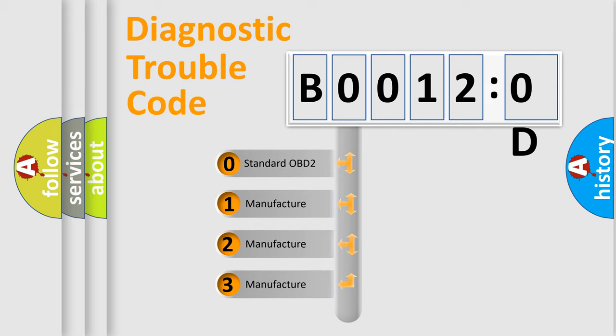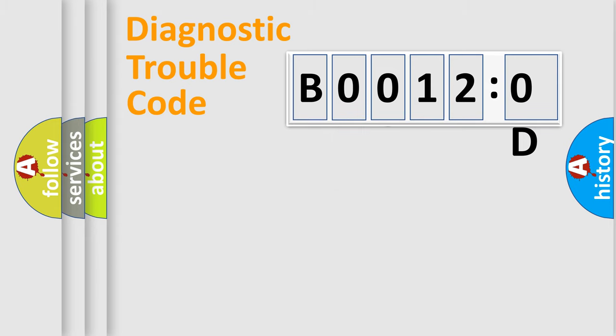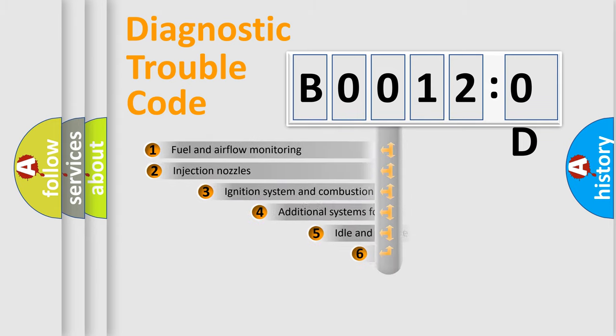If the second character is expressed as zero, it is a standardized error. In the case of numbers 1, 2, or 3, it is a manufacturer-specific error expression.